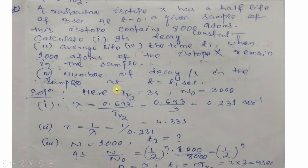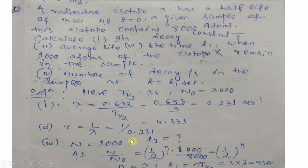For part (a), lambda = 0.693 / T-half. With T-half = 3 seconds, lambda = 0.693/3 = 0.231 per second. For part (b), average life tau = 1/lambda = 1/0.231 = 4.33 seconds.